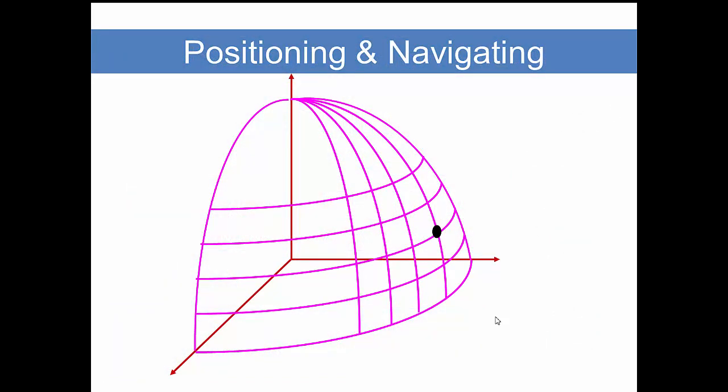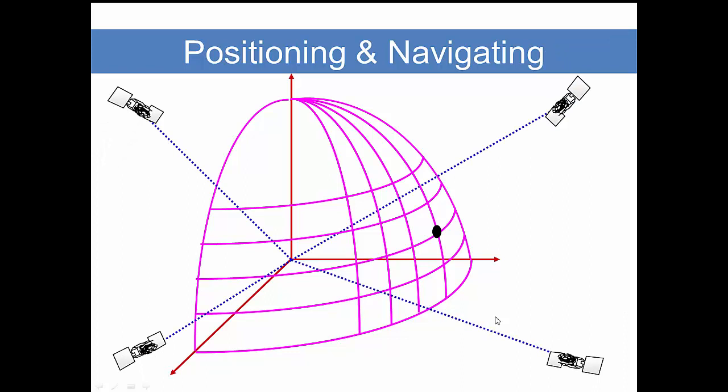Once that clock synchronization is complete, your receiver can compute its position relative to all those satellites. We know where the satellites are relative to the earth mass center. And now we can calculate the distance from the satellites to the receiver. Because now your receiver clock is synchronized with the satellite clocks.